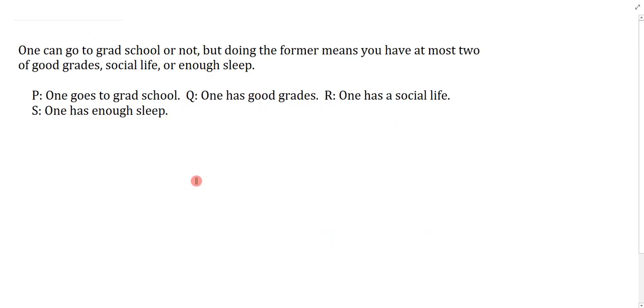Last question. One can go to grad school or not but doing the former means you have at most two of good grades, social life, or enough sleep. In my first passive highlighting I actually missed the comma but. The comma but is important because the comma is indicating the main connective which is the and. I'll highlight it and we have to do the left conjunct and then the right conjunct.